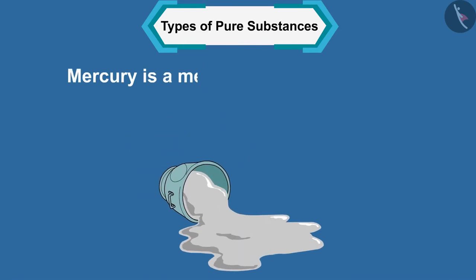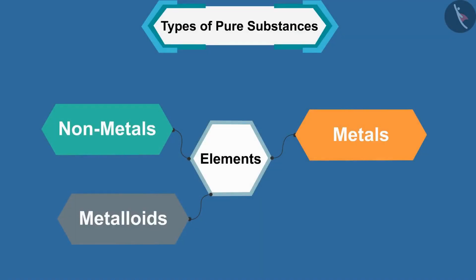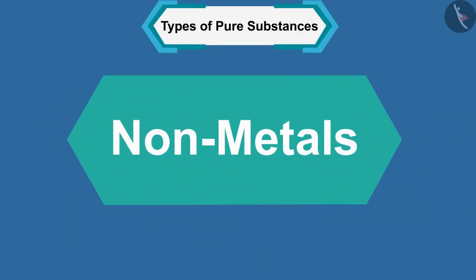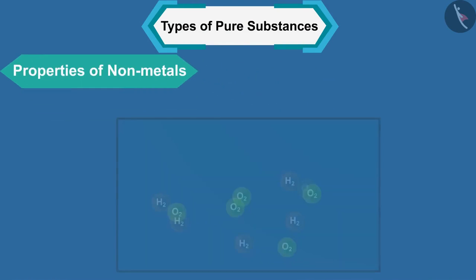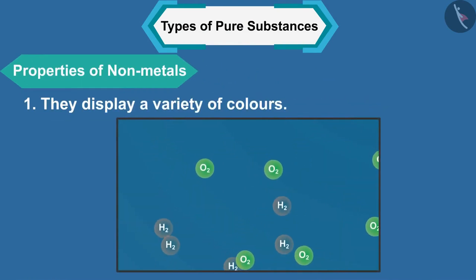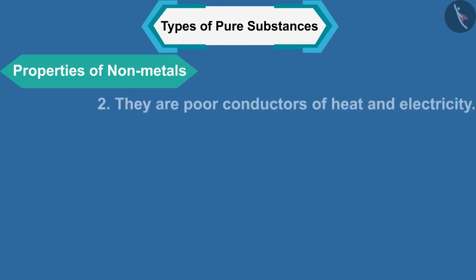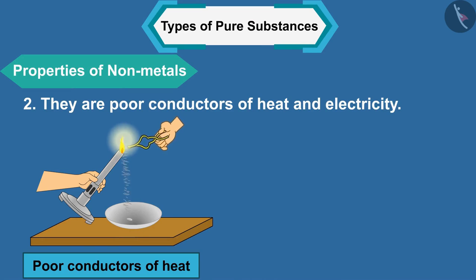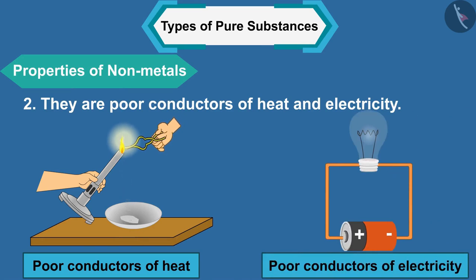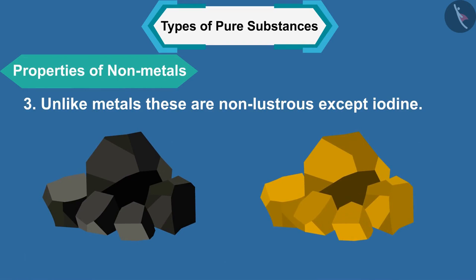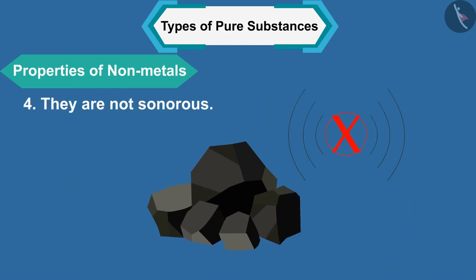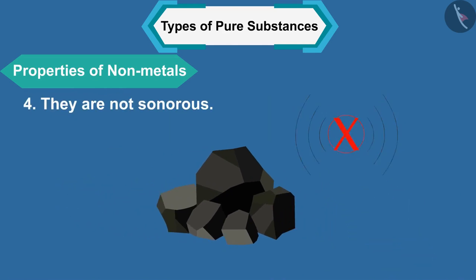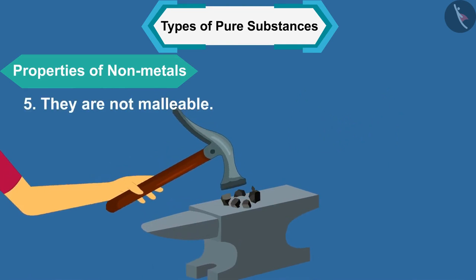Do you know an interesting thing? Mercury is a metal that remains liquid at room temperature. Let us now look at some properties of non-metals. One, they display a variety of colors. Two, they are poor conductors of heat and electricity. Three, unlike metals, these are non-lustrous, except iodine.